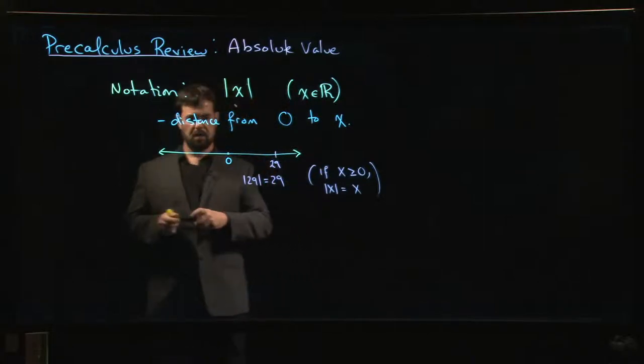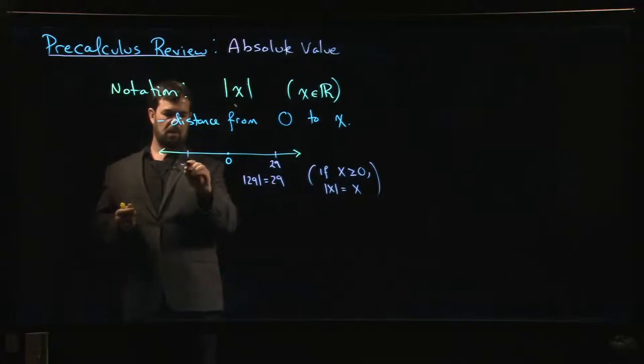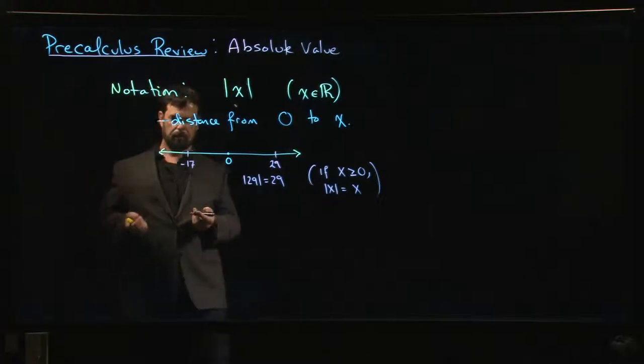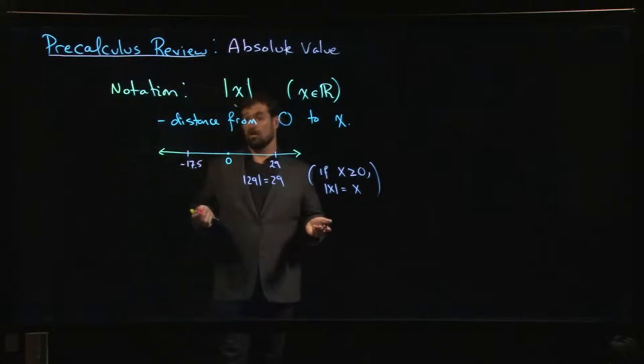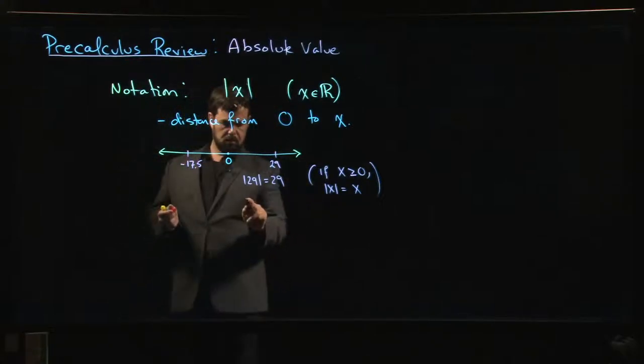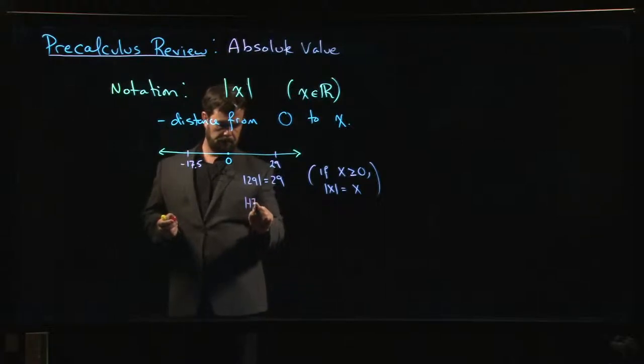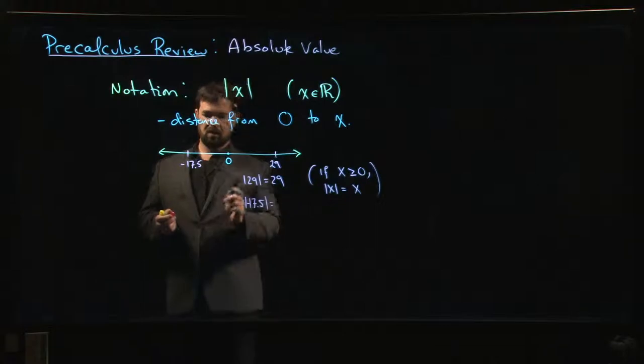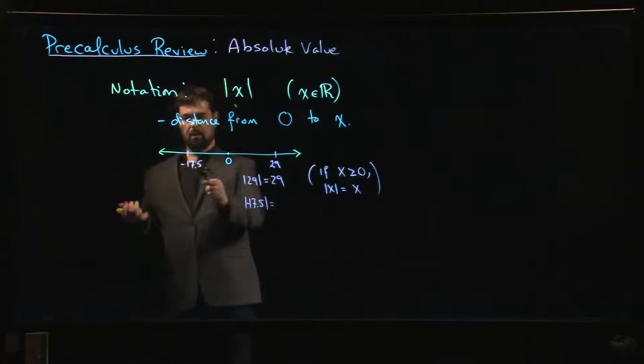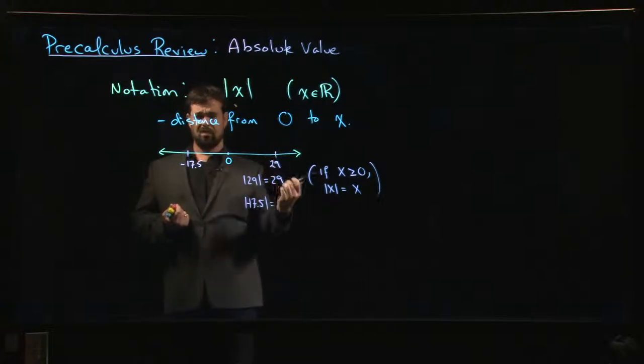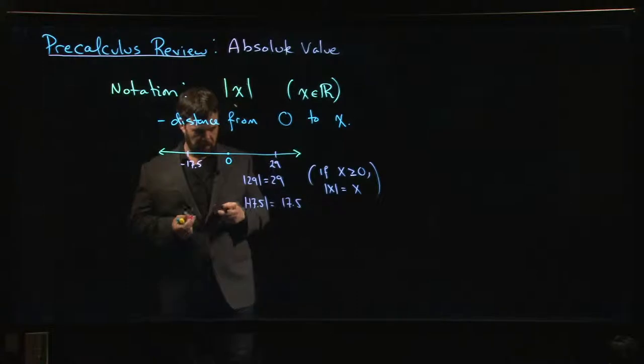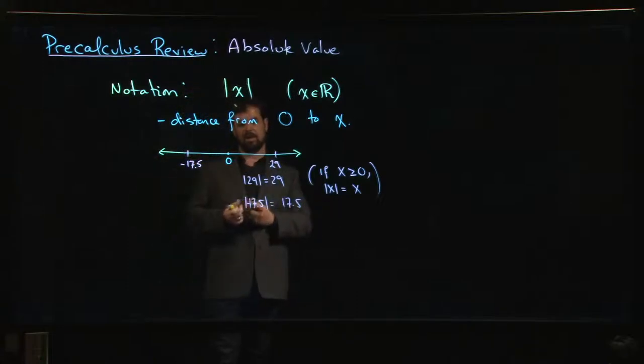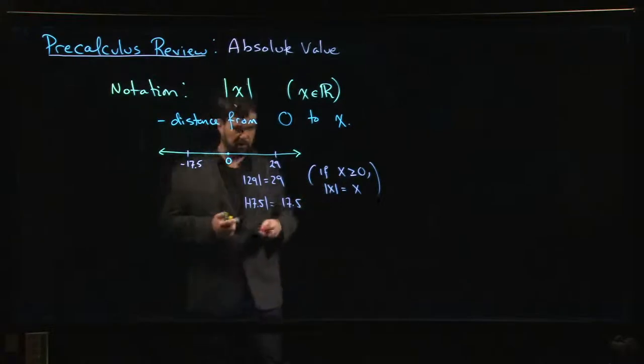Now, what if we wanted the distance from 0 to, I don't know, minus 17, minus 17.5? Why not, throw a decimal in. How far away are they? Well, the distance is going to be, again, it's going to be the number. The distance from 0 to any number is that number, except we never want distance to be negative. So if we throw a negative number in and we want to give the distance, just remove the minus sign. So absolute value of negative 17.5 is positive 17.5.